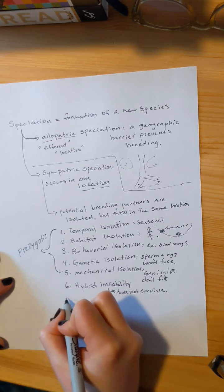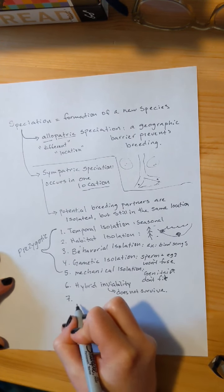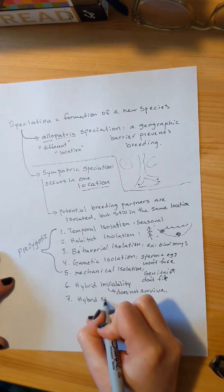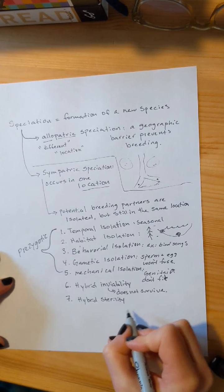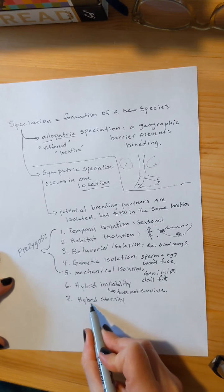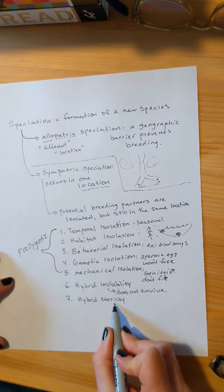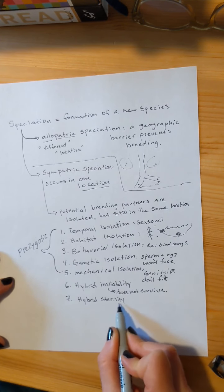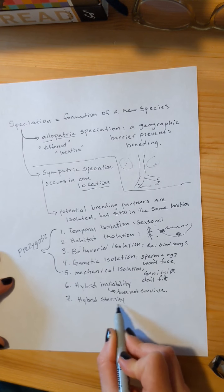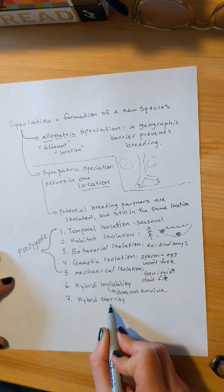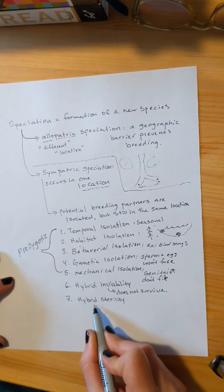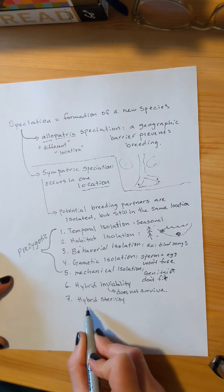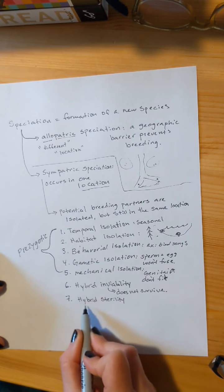You could also have hybrid sterility. That means that you produce an offspring, but your offspring cannot produce offspring of their own. They are sterile. So it's kind of a dead end. You and your partner produced a child, but your kid can't have kids. And so it will not create a whole new species because it cannot reproduce itself.